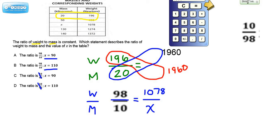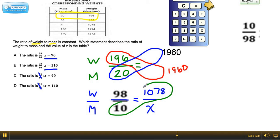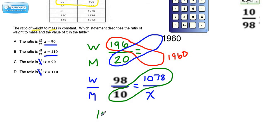Now, once again, we can use cross products. If we do this times this, that would equal 1078. And then we would just put the zero on it, making it 10,780. Equals, and then we would do this cross product, 98X. 98 times X.